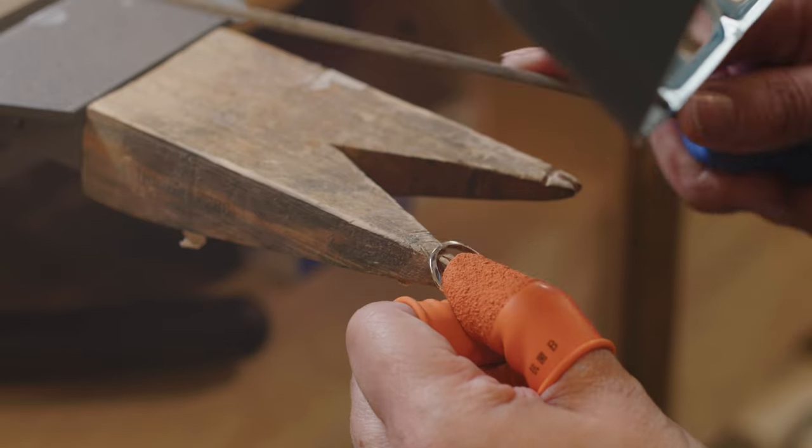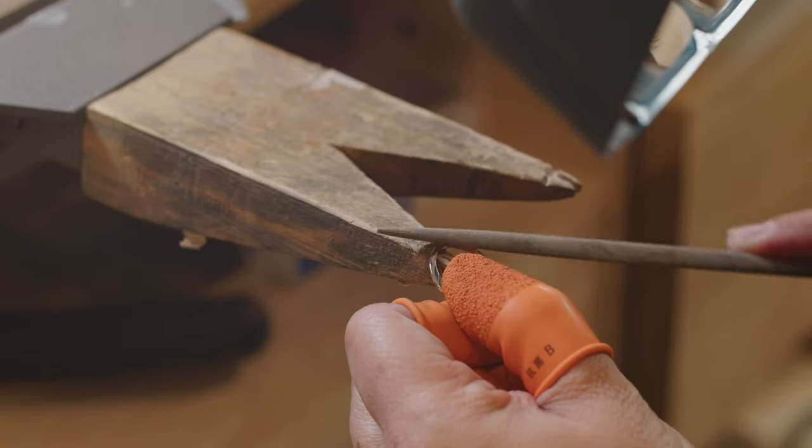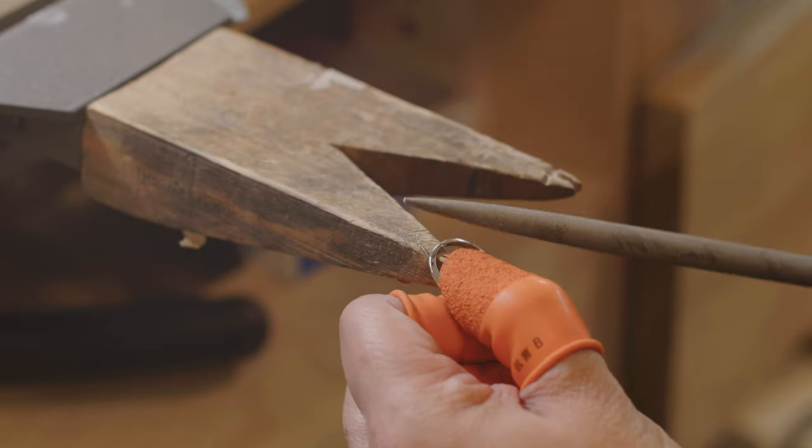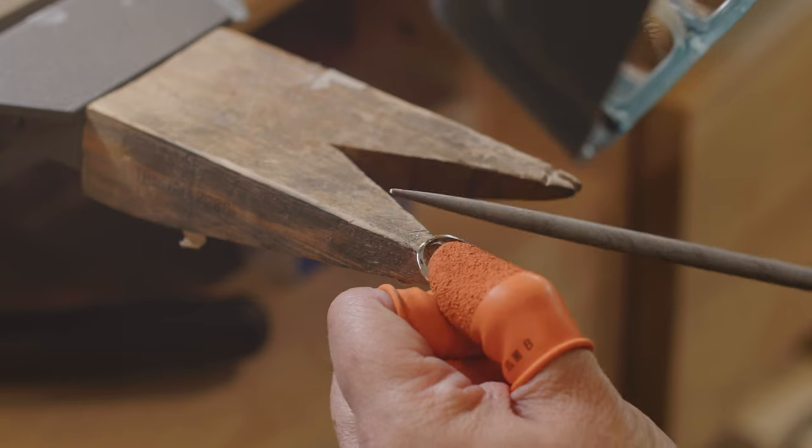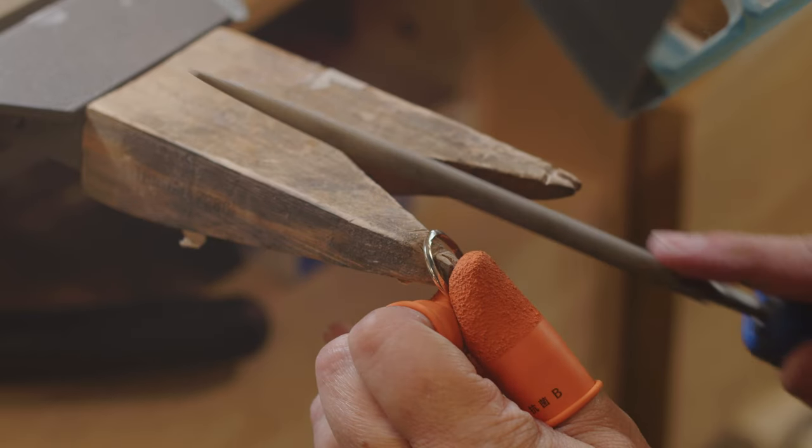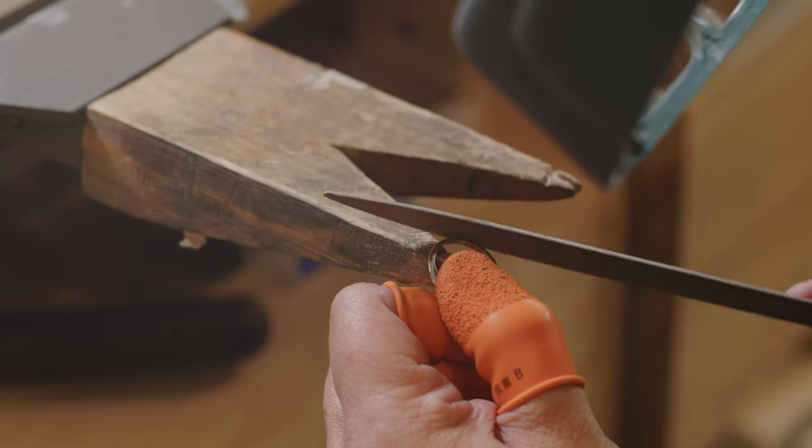Always going in one direction. You always want to go with the shank, never across. By going across like on the solder joint like that, you can cause a dip.